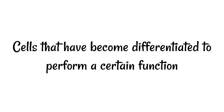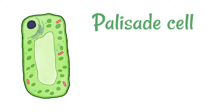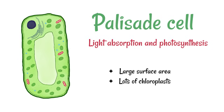First up, let's look at that classic plant cell. The one that we often draw is a palisade cell and its job is light absorption and photosynthesis. It's adapted for its function in that it's got a large surface area and it's also got lots and lots of chloroplasts. Chloroplasts are the organelles which are responsible for photosynthesis.